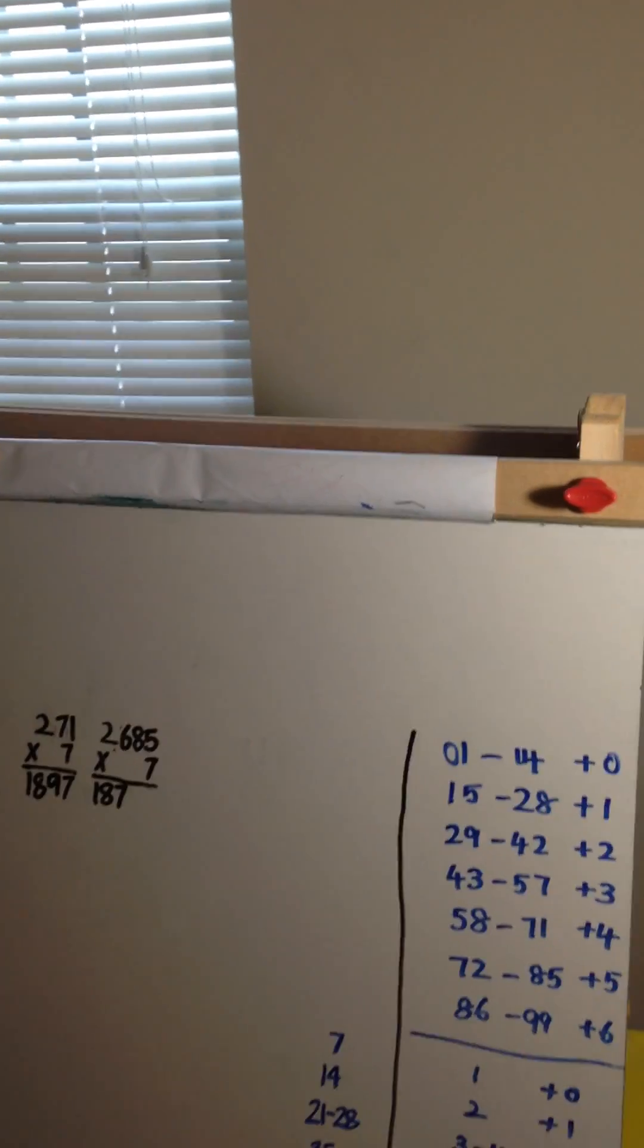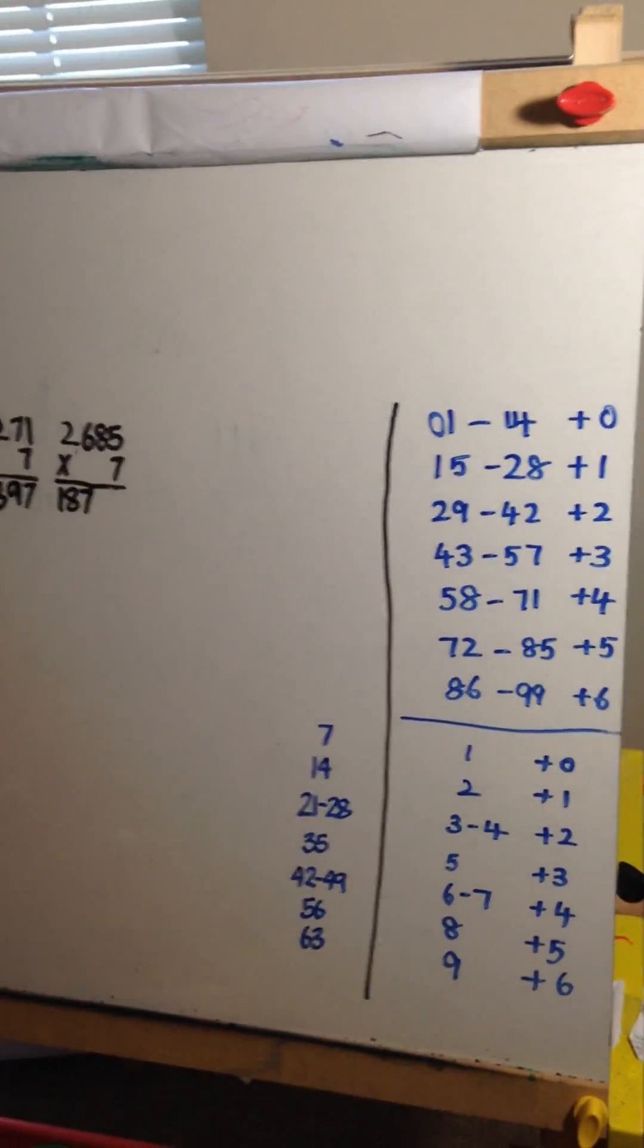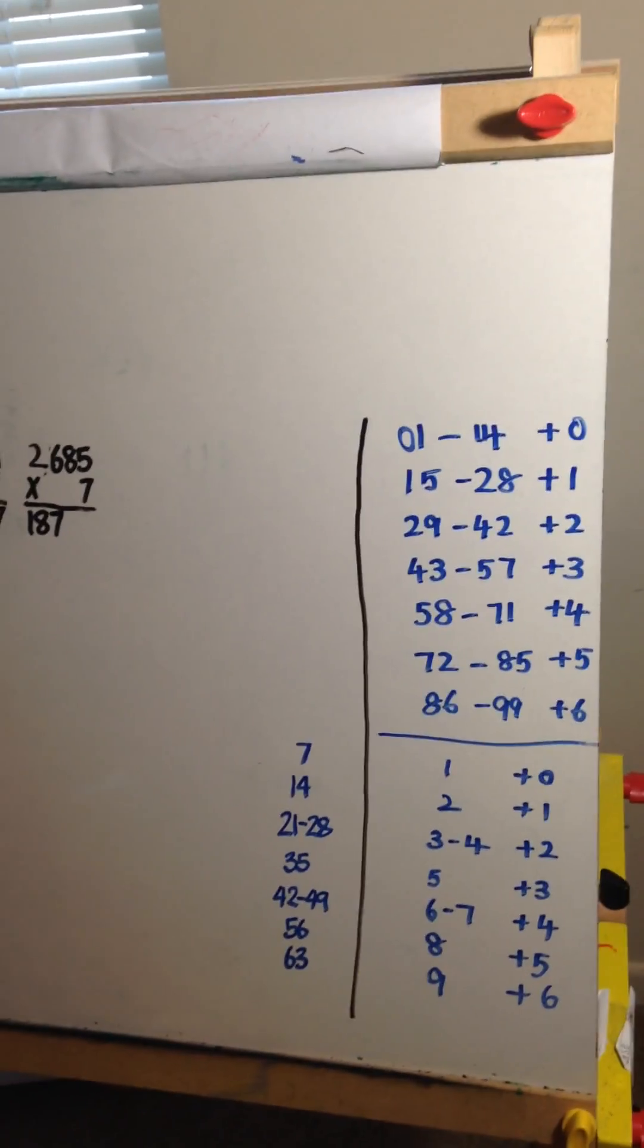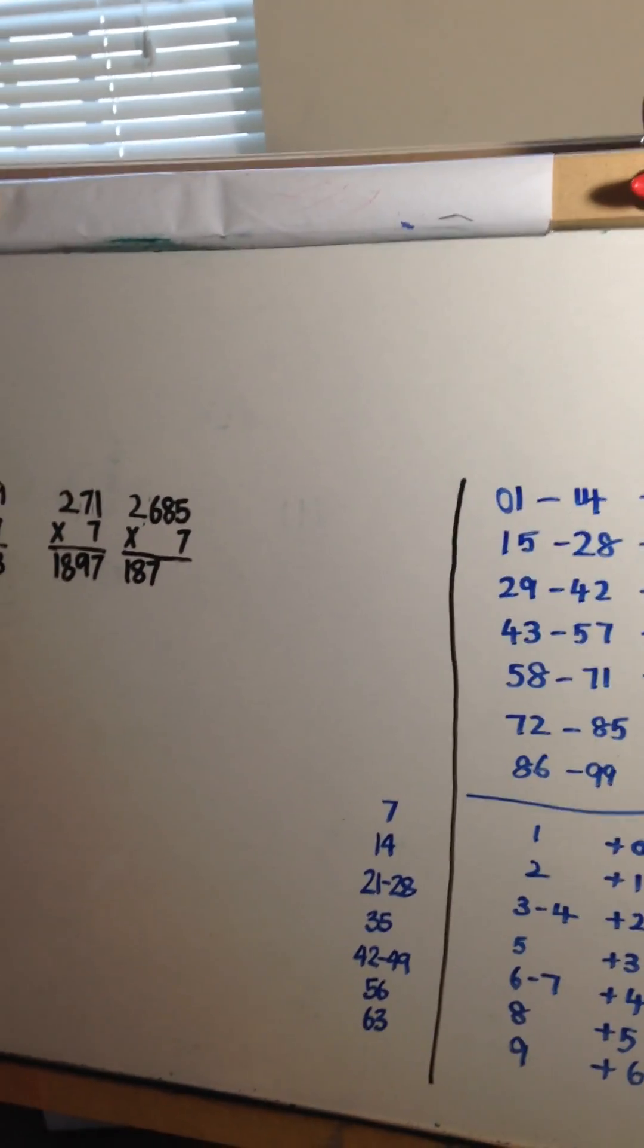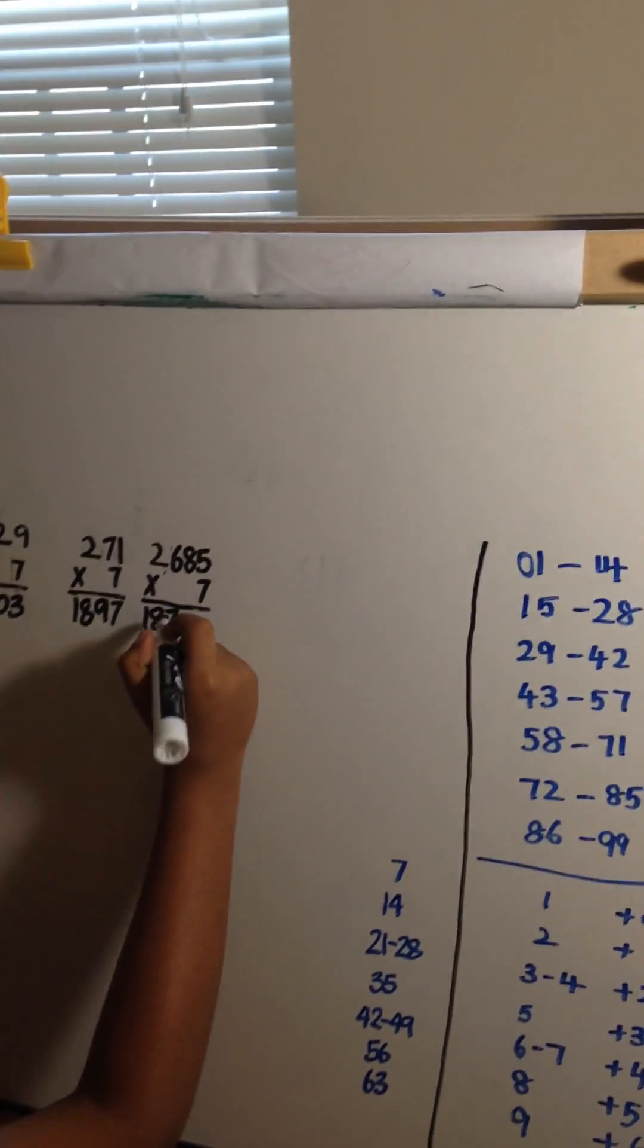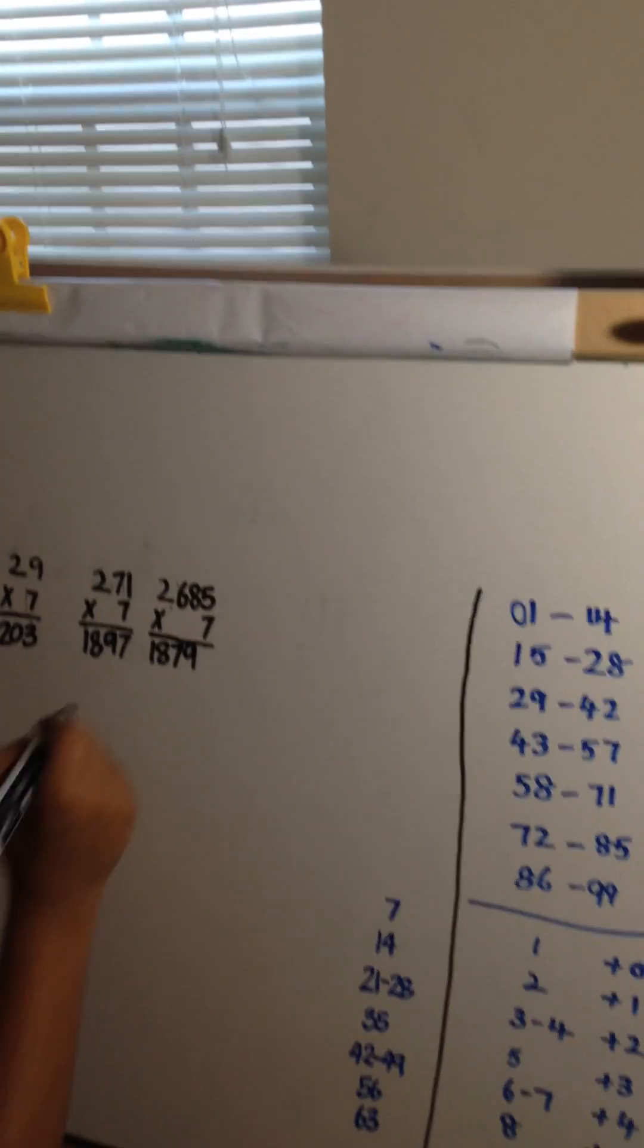Now what is 8 into 7? 56. Go back to the one-digit formula again. What does 5 suit? 5 suits plus 3. So 56 plus 3 is 59. Take the 5 off and write 9. 5 into 7 is 35. Take the 3 off and write 5. Do you have any questions?